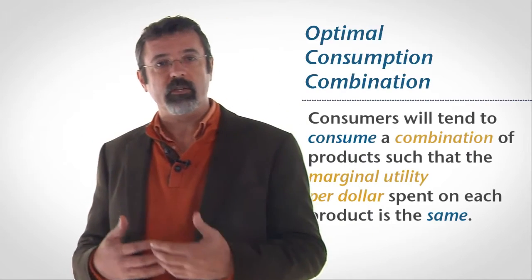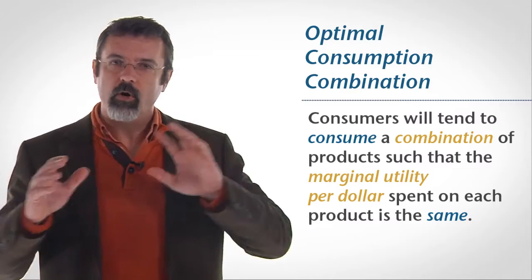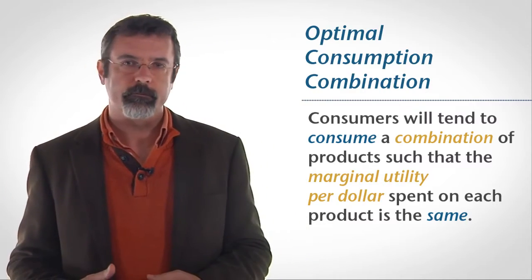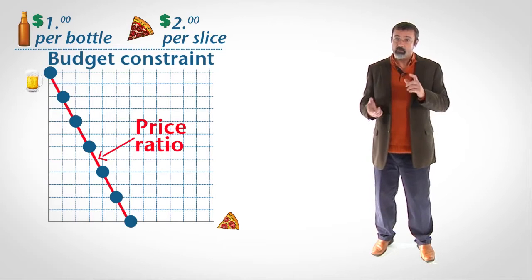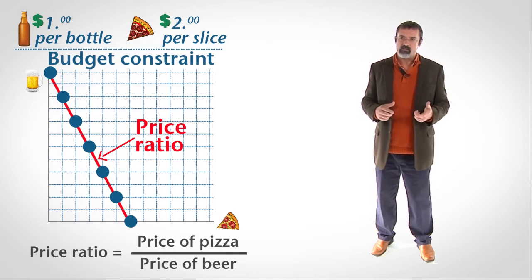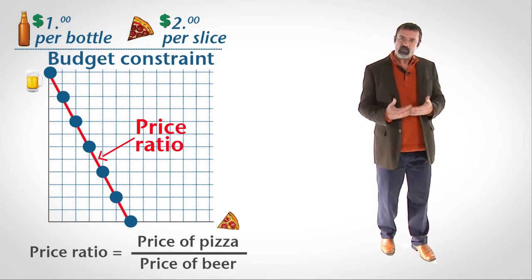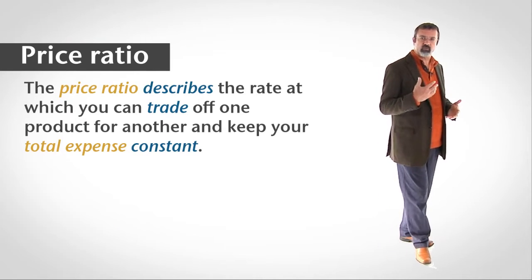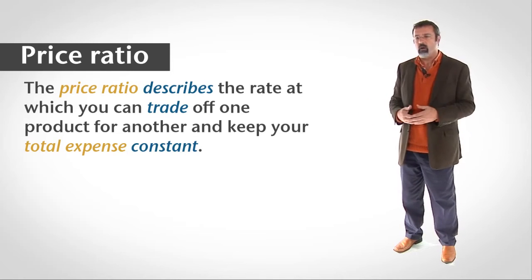We know that consumers will tend to consume a combination of products such that the marginal utility per dollar spent on each product is the same. The slope of the budget constraint, called the price ratio, is the price of the product on the horizontal axis divided by the price of the product on the vertical axis. The price ratio describes the rate at which one can trade off beer for pizza and keep total expense constant.